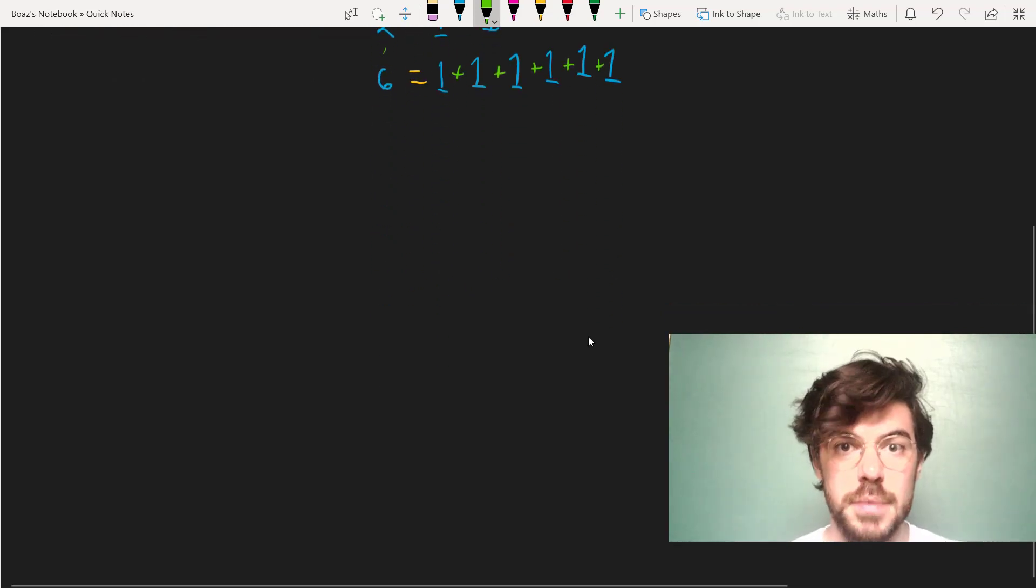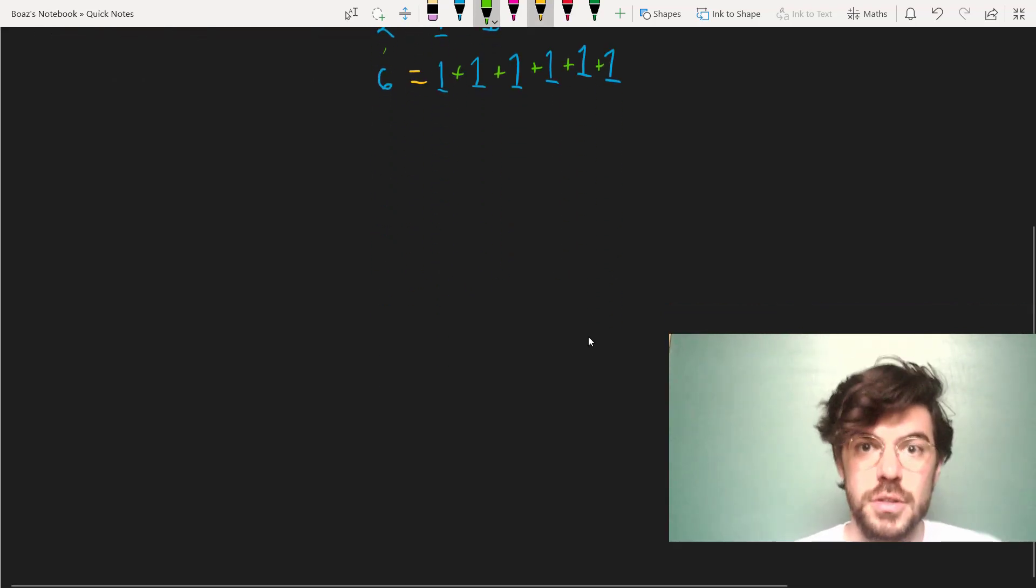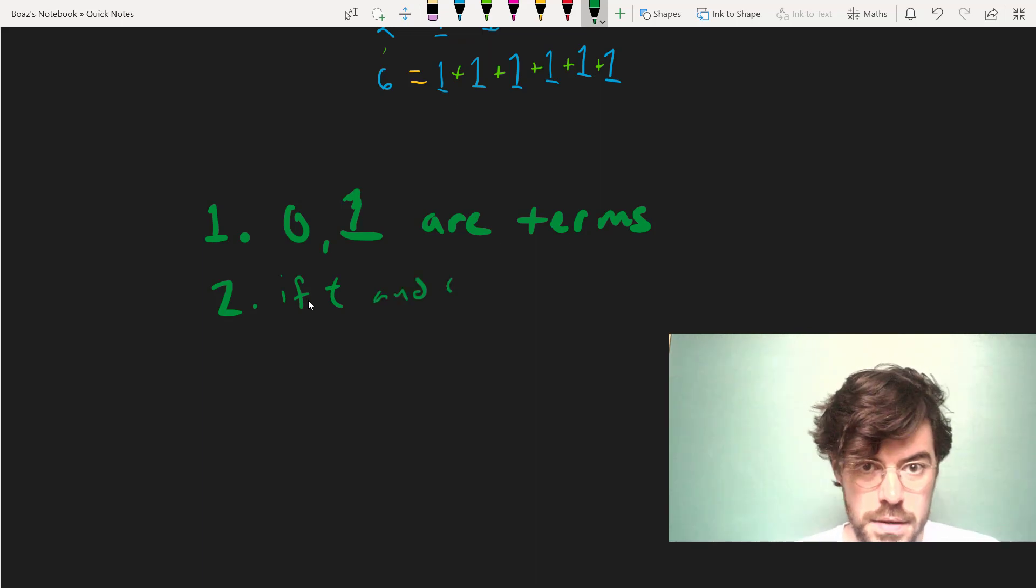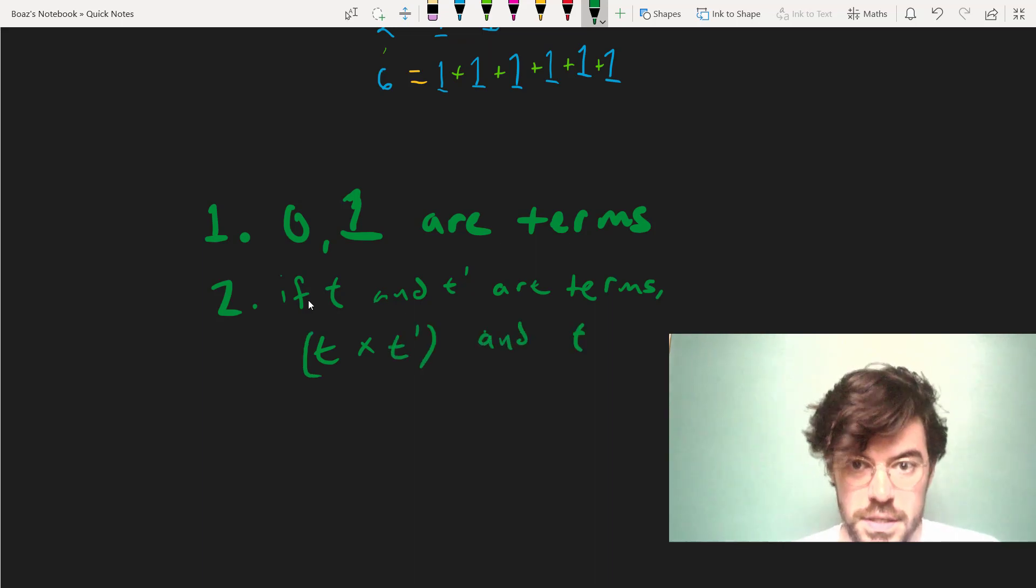And here are the limitations on those. So these are the rules. We'll say 0 and 1 are terms. The second rule is that if t and t' are terms, t times t' and t plus t' are also terms.